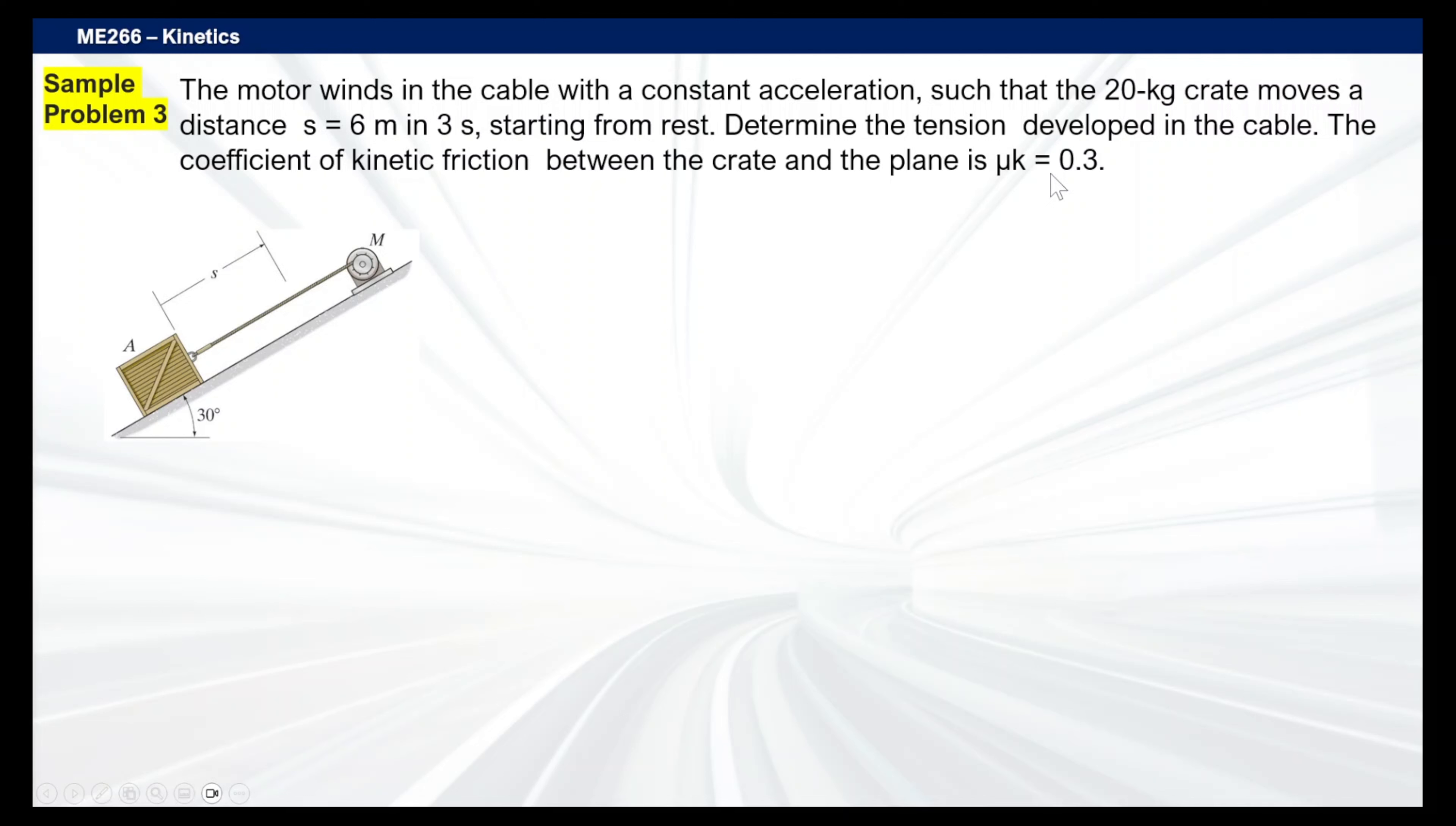So our first task here is definitely identifying what the givens are. We have the 20 kilogram crate, S is 6 meters, and time is 3 seconds. Starting from rest should give you some clue that our initial velocity is zero. We need to determine the tension, so T is unknown. We're also given a coefficient of kinetic friction which is 0.3, so that will be our friction force there.